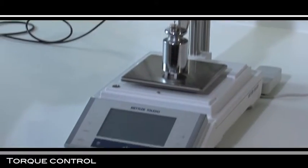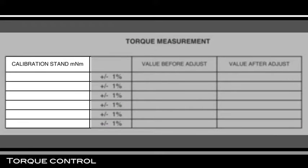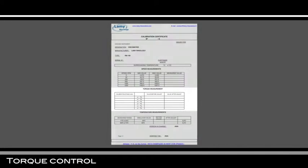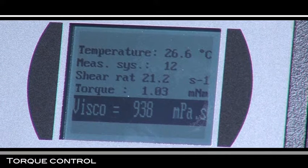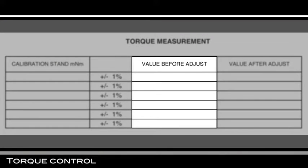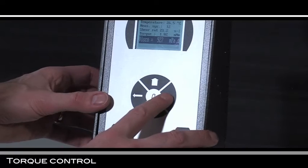Note the torque indicated by the scale as theoretical value. Note the torque measured by the Rheomat as before adjustment value. Repeat the operation for the following speed and torques.